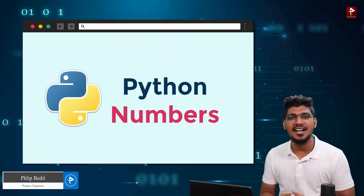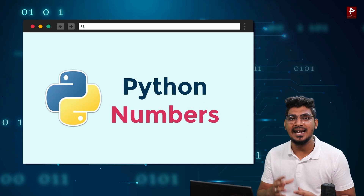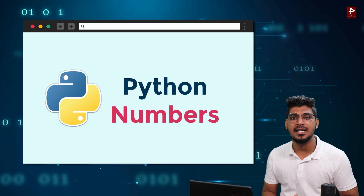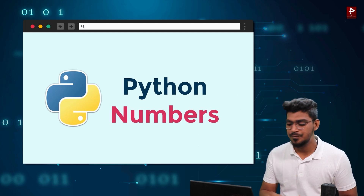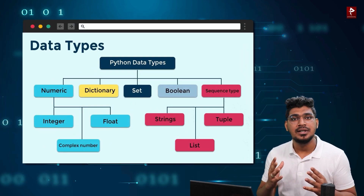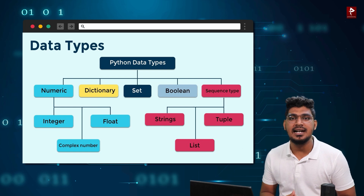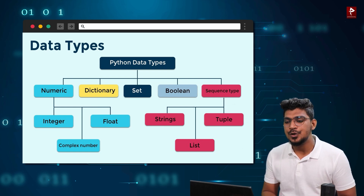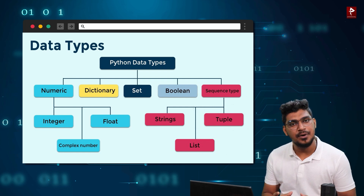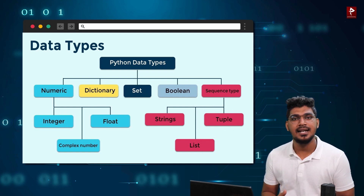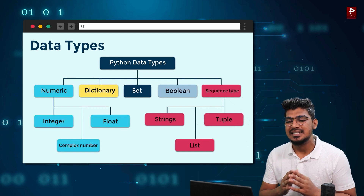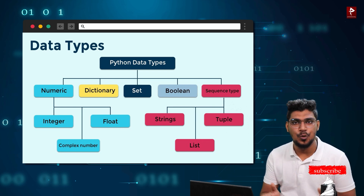In Python numbers, there are numbers in Python. For example, there are 5 types here. What we can see is Numeric, Sequence and Set, Dictionary and Boolean.